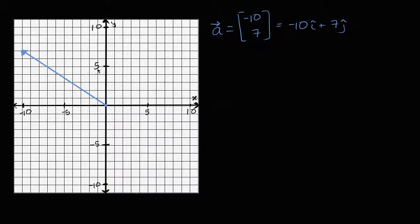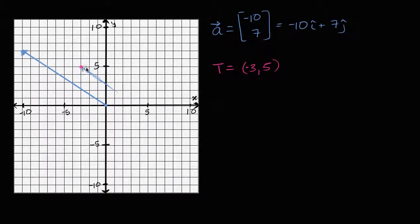But let's say we wanted to move it around — we wanted it to have a different terminal point. Instead of having the terminal point at negative 10, seven, let's say it had the terminal point negative three, comma five. So we could imagine what the vector would look like there. We would just translate this vector over, so it would look something like this. The tip of the vector would terminate right over there, and then it would start someplace in this area, but I can't tell precisely just from the graph. Let's see if we can figure it out mathematically.